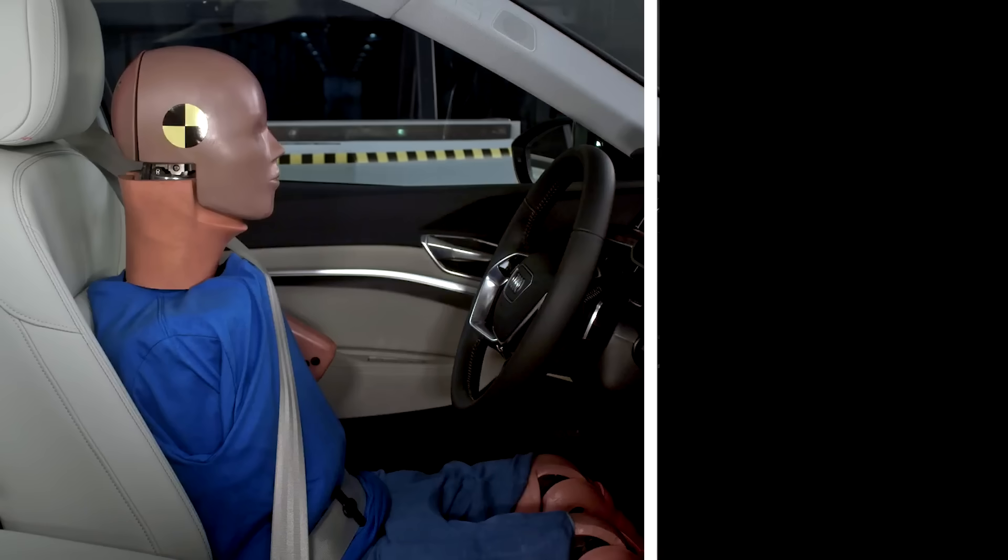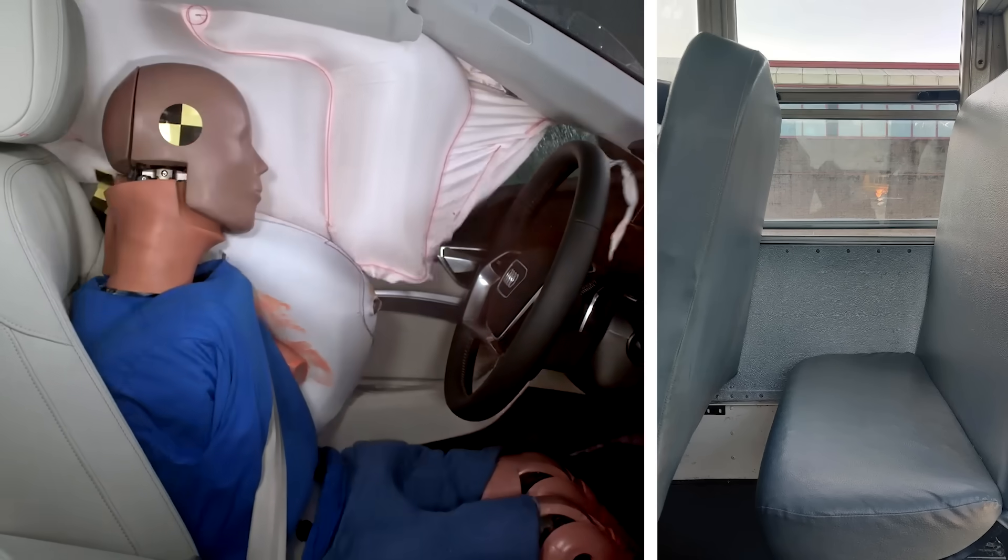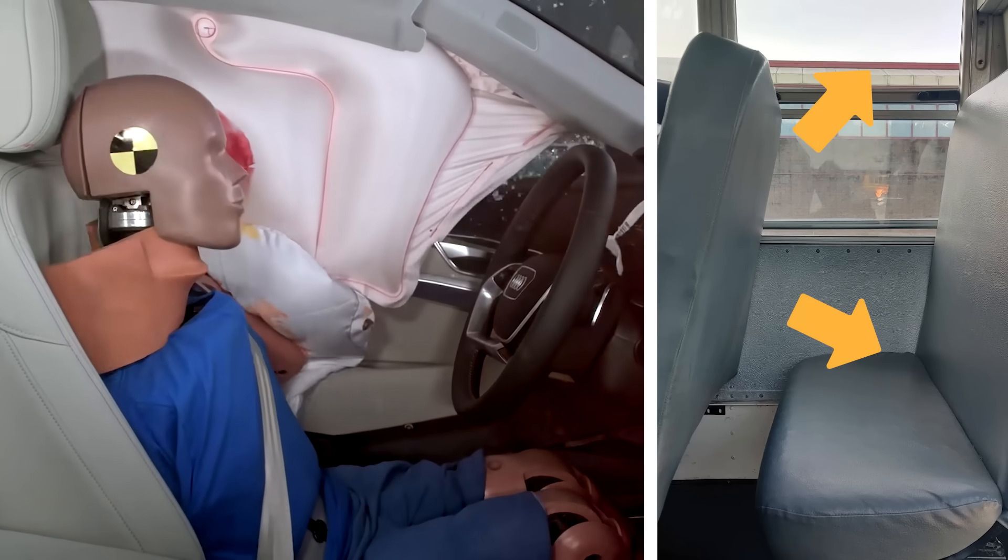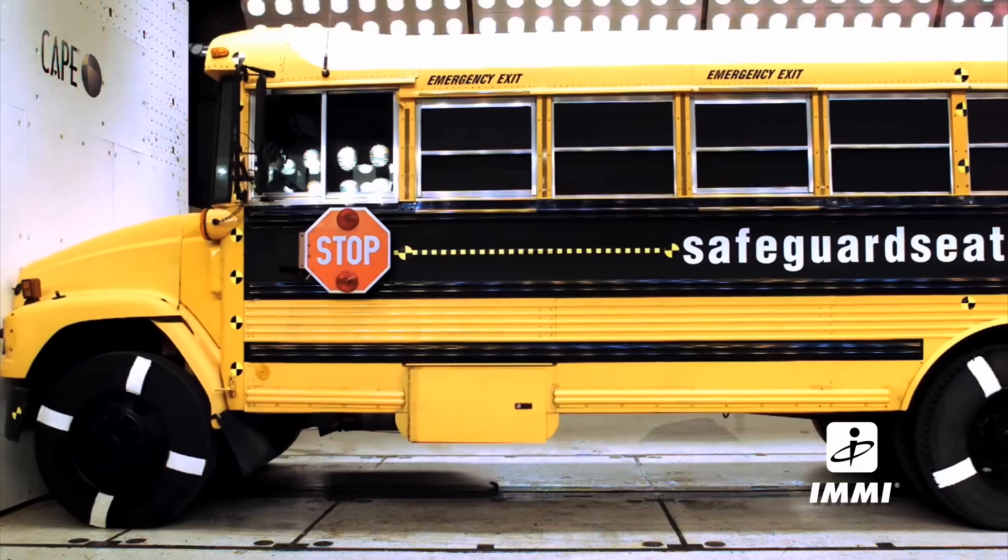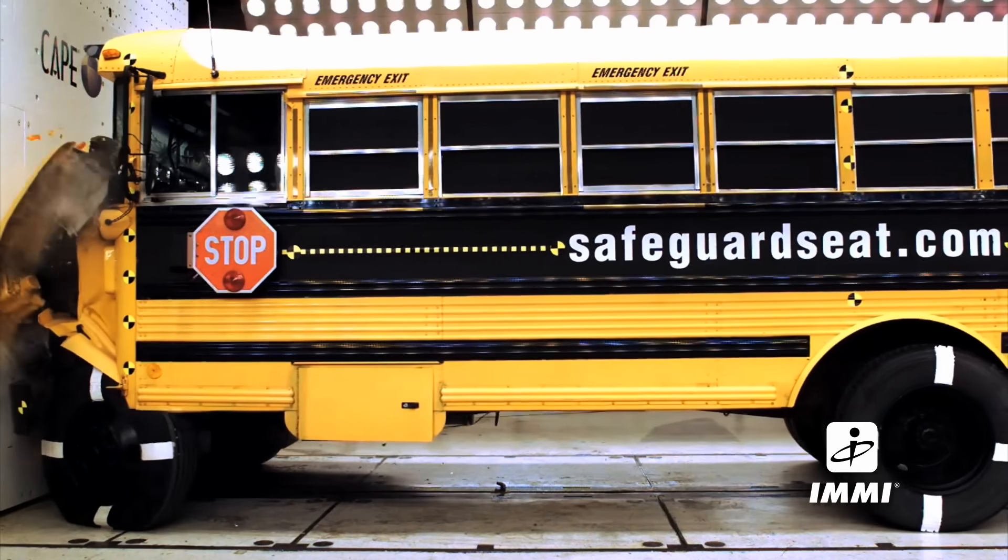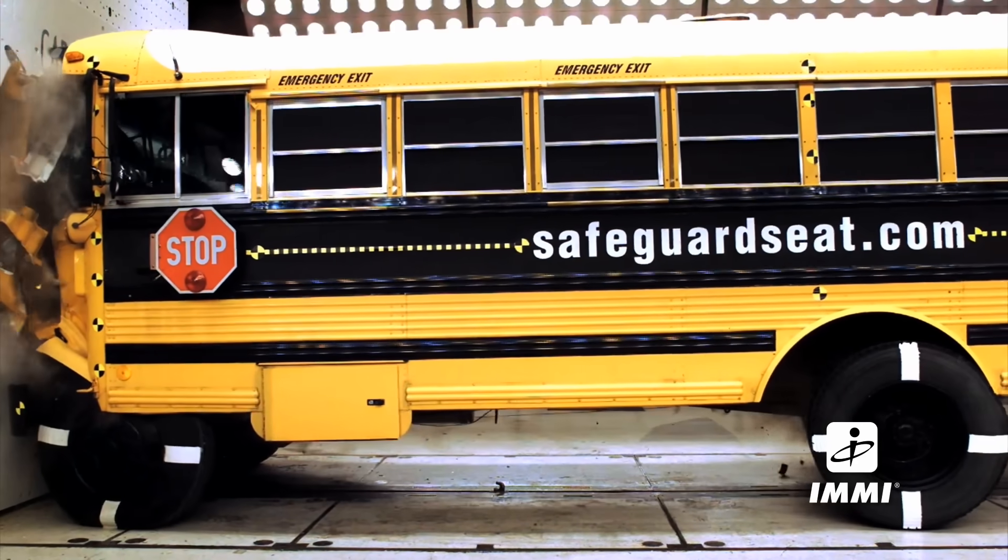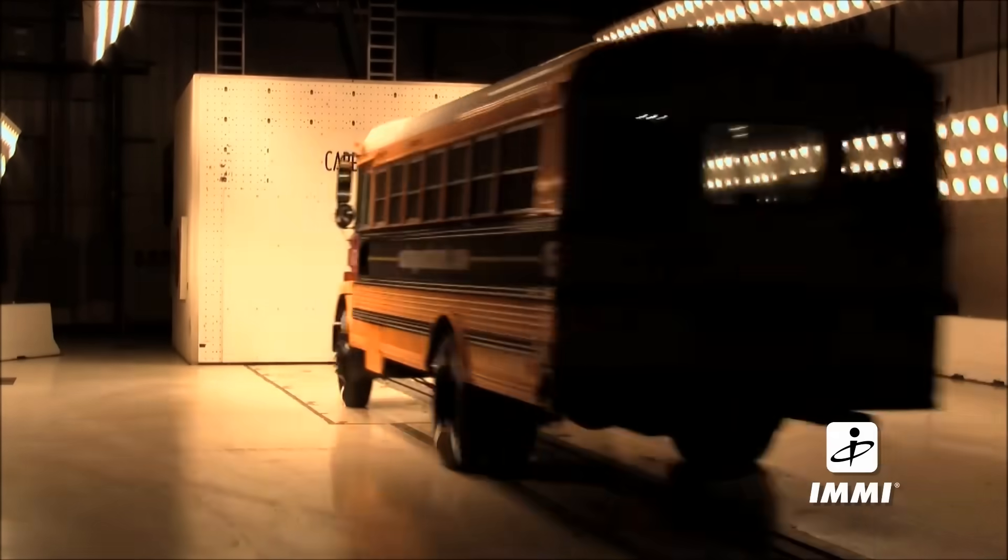But here's the strange part. Unlike cars, school buses don't have airbags or even seatbelts. And yet, they're built to withstand crashes that would destroy smaller vehicles. So how is that possible? And what makes school buses so uniquely safe? To answer that, we need to look at where it all started.